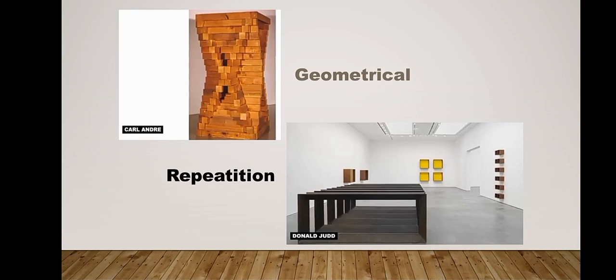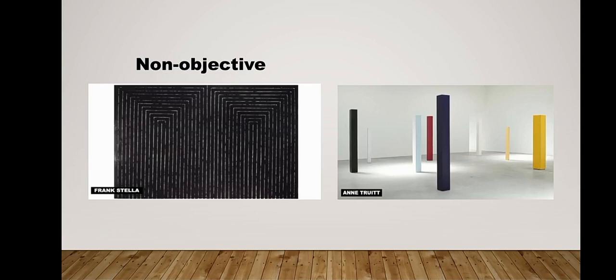Repetition — shapes are repeating in a non-hierarchical movement. Non-objective — it has no meaning inside; it just is. It does not relate to the artist's personal life; it exists just for aesthetic function. And lastly, hard-edged — it involves sudden change in direction, which can be seen in the lines of shapes.